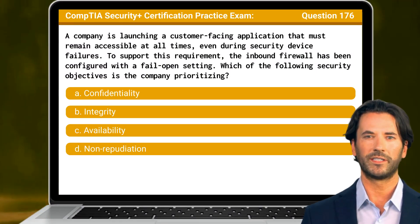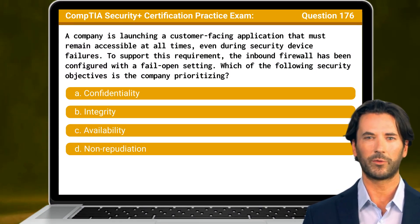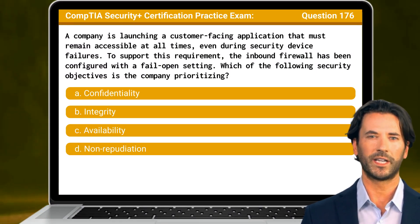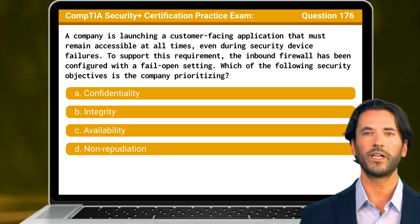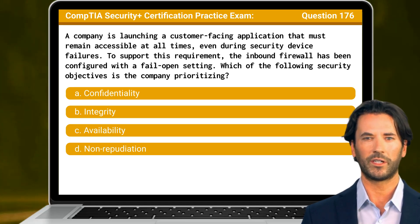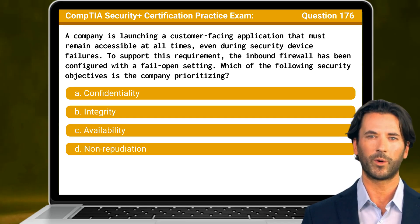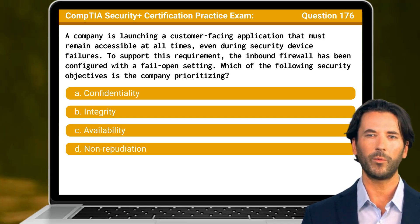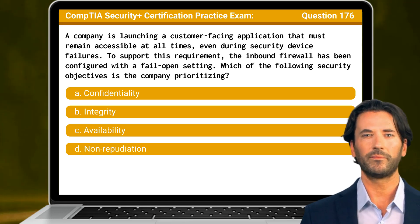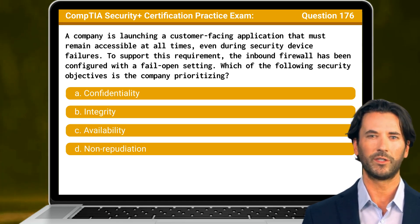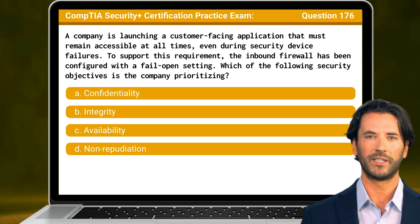Question 176. A company is launching a customer-facing application that must remain accessible at all times, even during security device failures. To support this requirement, the inbound firewall has been configured with a fail open setting. Which of the following security objectives is the company prioritizing?